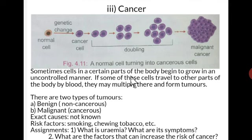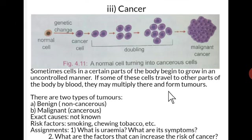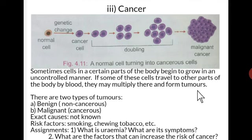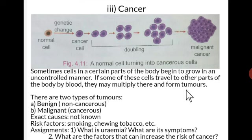Sometimes cells in certain parts of the body begin to grow in an uncontrolled manner. The growth of cancer cells is uncontrolled and cannot be controlled. If some of these cells travel to other parts of the body through the blood, they may multiply there and form tumors. Tumors are unwanted groups of cells. For example, if cancer is in the kidney, through the blood it can travel to the lungs or any other part and develop tumors there.